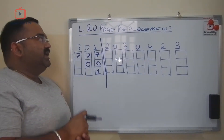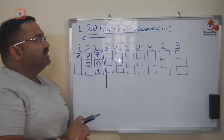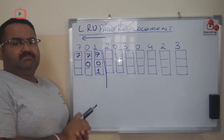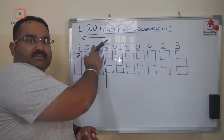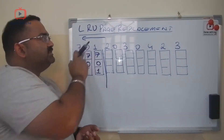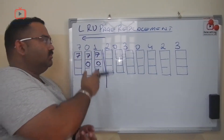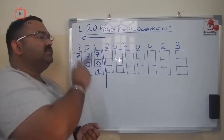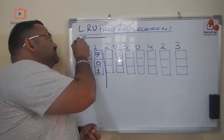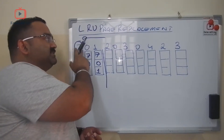Now I need page 2 but the cache is already full. In the Least Recently Used approach, we go back and check which page we did not use for the longest time. I just used page 1, used page 0 before that, and page 7 was used before page 0. So the oldest referred page is page 7.